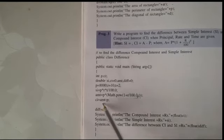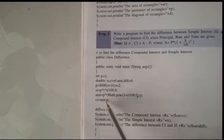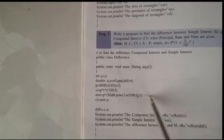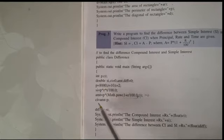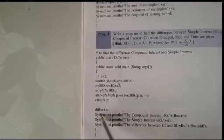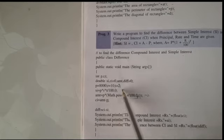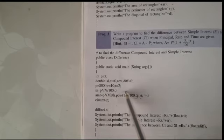Now CI: CI formula is amount minus principal — amt minus P. The value which comes from the amount formula, minus 8000, gives CI. Now we will find the difference: difference is equal to CI minus SI — the value of CI and the value of SI which will come after solving will be used to find the difference.